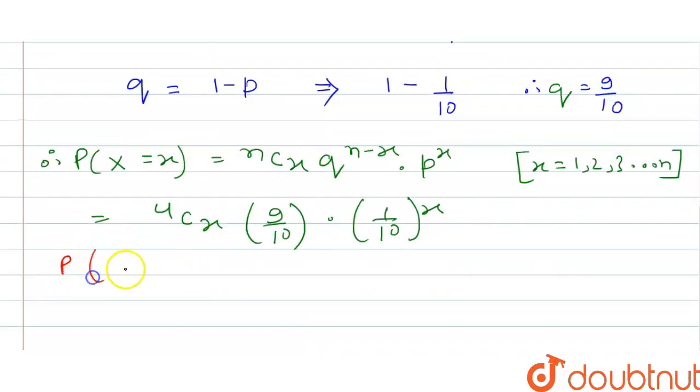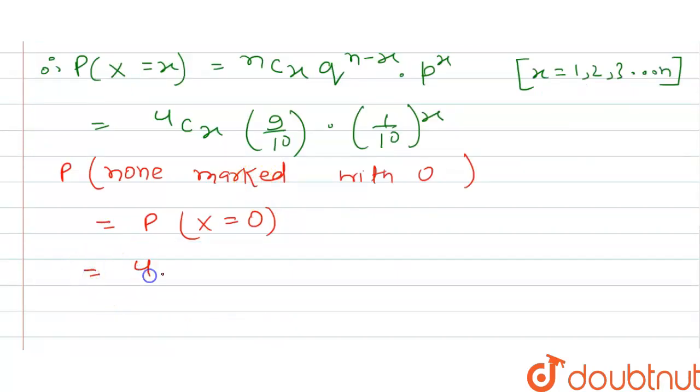Now probability that none marked with 0, we have to find the probability that none marked with 0, that is P(X=0). Now 4C0 times 9 by 10 to the power 4 multiplied by 1 by 10 is the value of P, power 0.